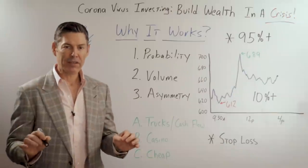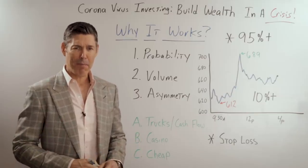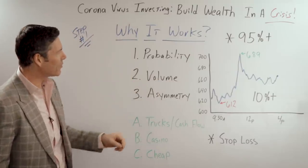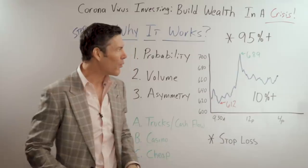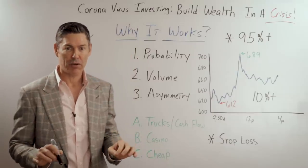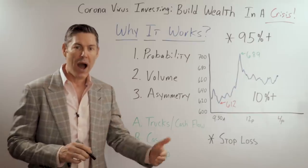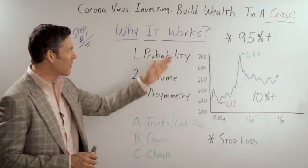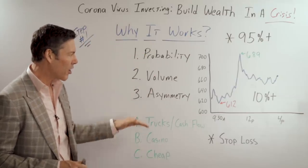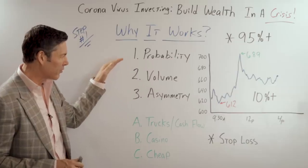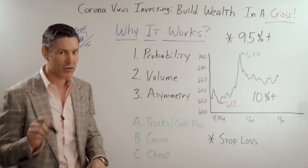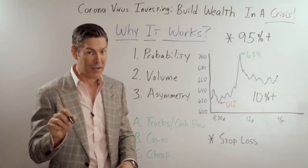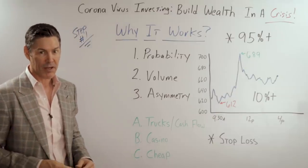Now you may be asking yourself, George, what on earth does a binomial calculator or any of this have to do with the coronavirus or building wealth in a crisis? It has everything to do with it, because regardless of why you're investing, when you're investing, or the opportunity that the environment presents, you have to start with these three metrics: probability, volume, asymmetry. Step number three, we're going to get into some coronavirus-specific investments that you might be able to take advantage of.